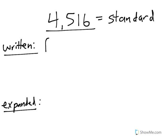4,516. So, the way we write that is four. Now, here's a key. Whenever you see a comma, you're going to have to write that word down.